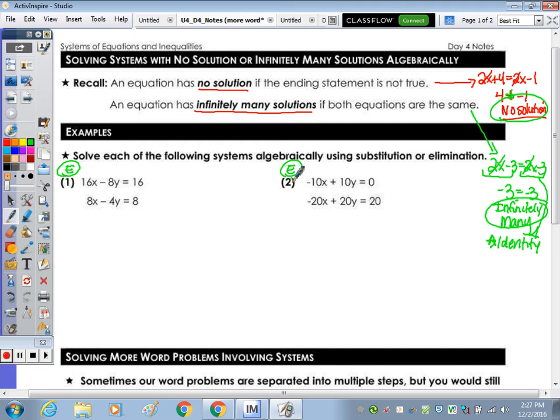In this one here, when you solve it, and you multiply this one by a negative two, let's bring down the first equation, 16x minus 8y equals 16. Distributing this all the way through, we end up with negative 16x plus 8y equals negative 16. When you add those together, what do you get? This becomes 0, this becomes 0, and this becomes 0. 0 equals 0, which is true.